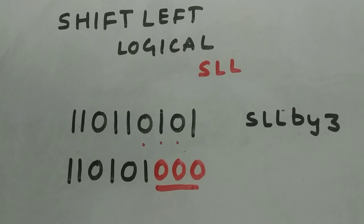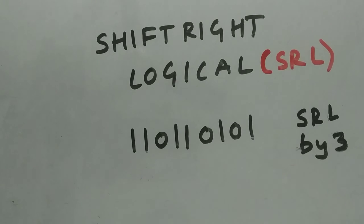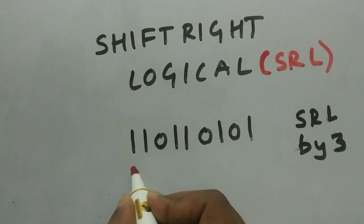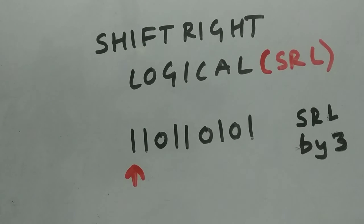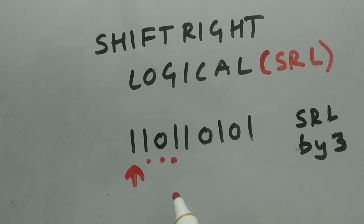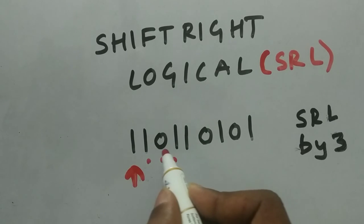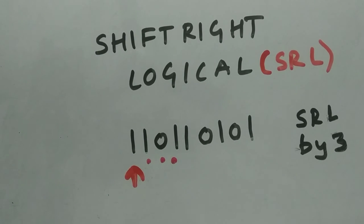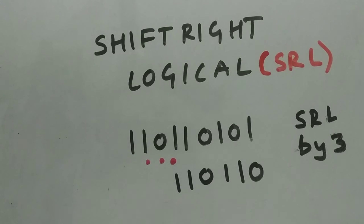Now let's discuss shift right logical. In shift left we started from the LSB side; for shift right we move from the MSB side. Shifting right logical by three: the MSB bit moves by three positions — one, two, and three — so the MSB bit comes here, the next bit comes here, and the next bit comes here, and so on.